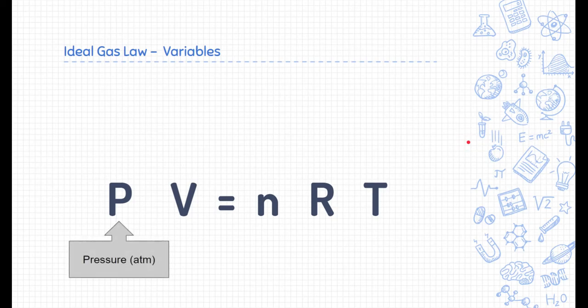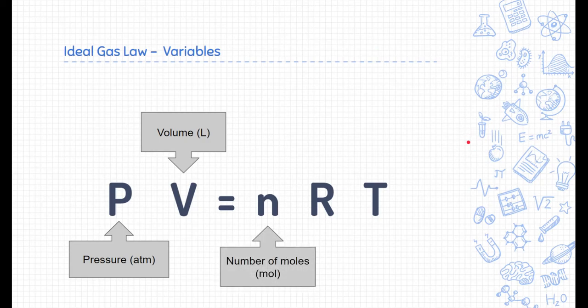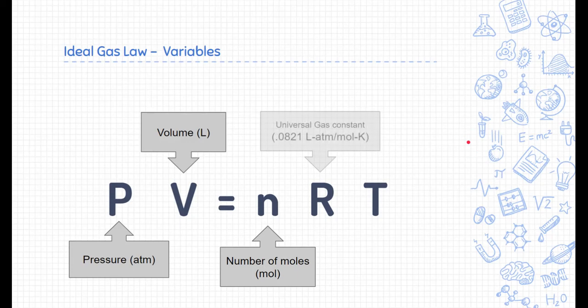P stands for pressure, and pressure has to be measured in atmospheric pressure. V is for volume, and volume must be measured in liters in this equation. N stands for the number of moles. That's a quantity, and we have to measure it in moles. R is a constant. It's called the universal gas constant, and it is always this number, 0.0821. You might notice that it has a very crazy-looking unit, and that's just because this number ties everything together. It's what makes this formula work.